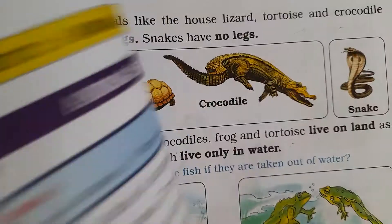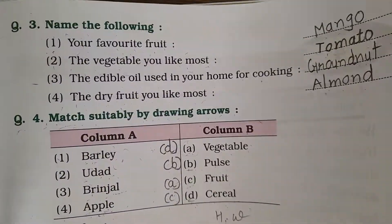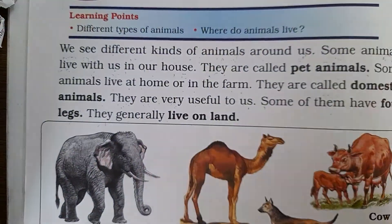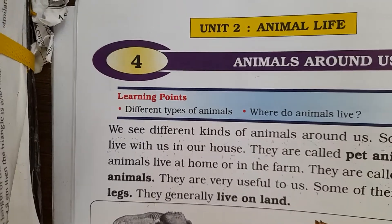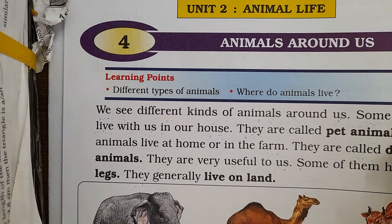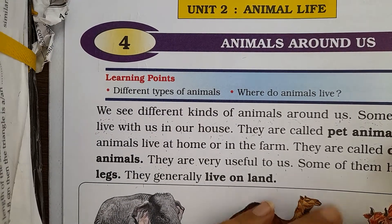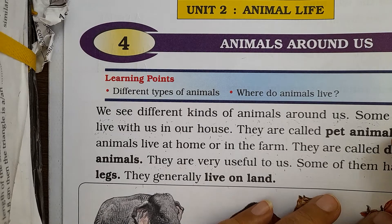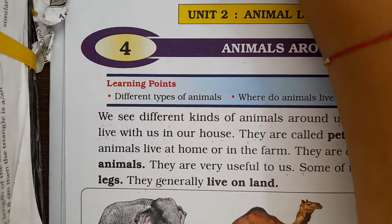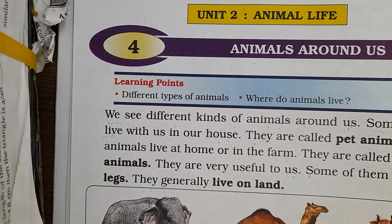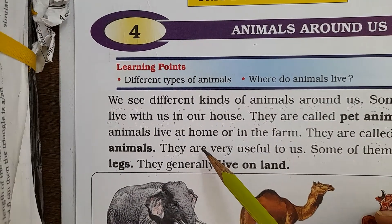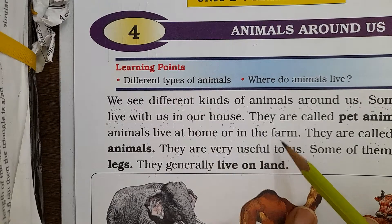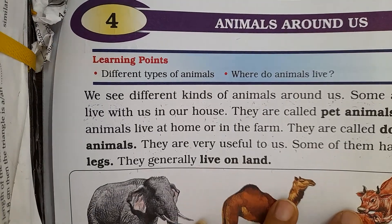Now everyone come to Chapter 4: Animals Around Us. So the animals around us — the animals we keep at home we call pet animals. The animals that live at home or on a farm we call domestic animals.